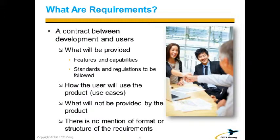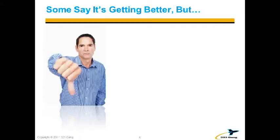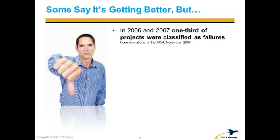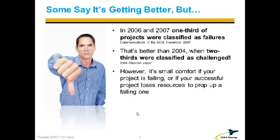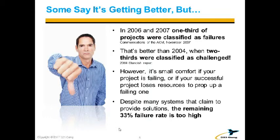We haven't talked about format or structure here — we're just saying requirements are a form of contract that we have to provide. Some say it's getting better, and I do think it's getting better. In 2006 and 2007, one-third of the projects were classified as failures. That's better than 2004 when we said half of the projects are failures. So it is getting better. However, if you're on one of those failing projects, you probably don't feel too good about it. Despite many systems that claim to provide solutions, there's still about a third failure rate of projects.